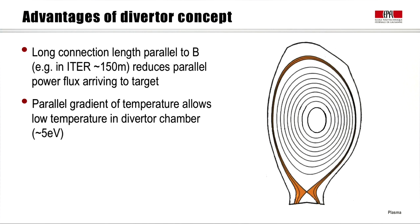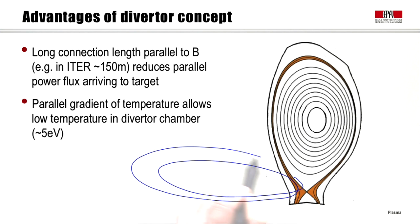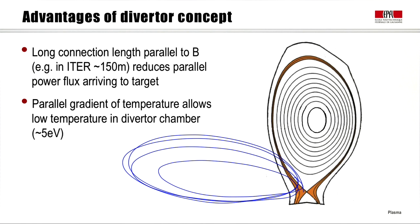Let's look specifically at the advantages of the diverter concept, which we are pursuing for all present and future devices. First, there is a very long connection length parallel to B — the effective length of the field lines that particles see as they approach the X point. In a 2D poloidal cut, the 3D field lines go around and around for a long distance due to the toroidal field before reaching the target. For ITER, that length is about 150 meters.